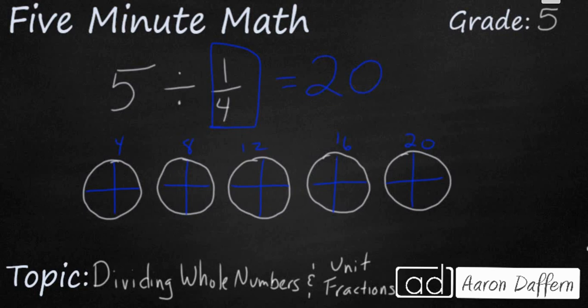And the same shortcut applies. If you take your divisor, your second number, and you flip it upside down, so one over four flipped upside down, the inverse would be four over one. And really, that's four wholes, so that's just going to be four. And the inverse of division is going to be multiplication. So if you have the inverse operation and the inverse divisor, then you can simply multiply, and you're going to get twenty.